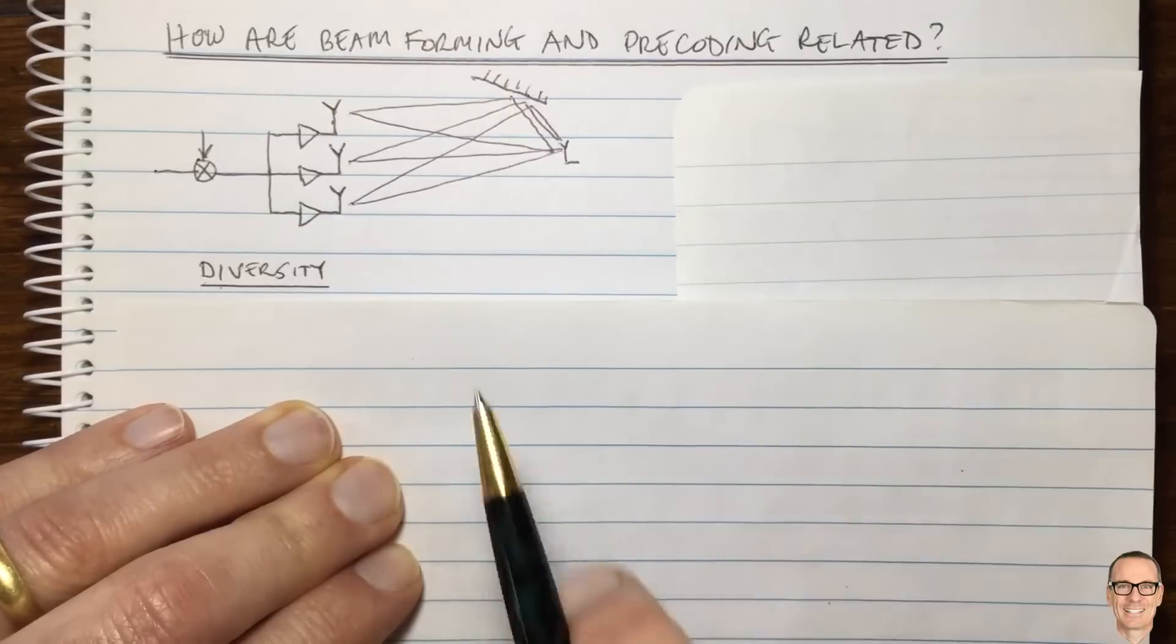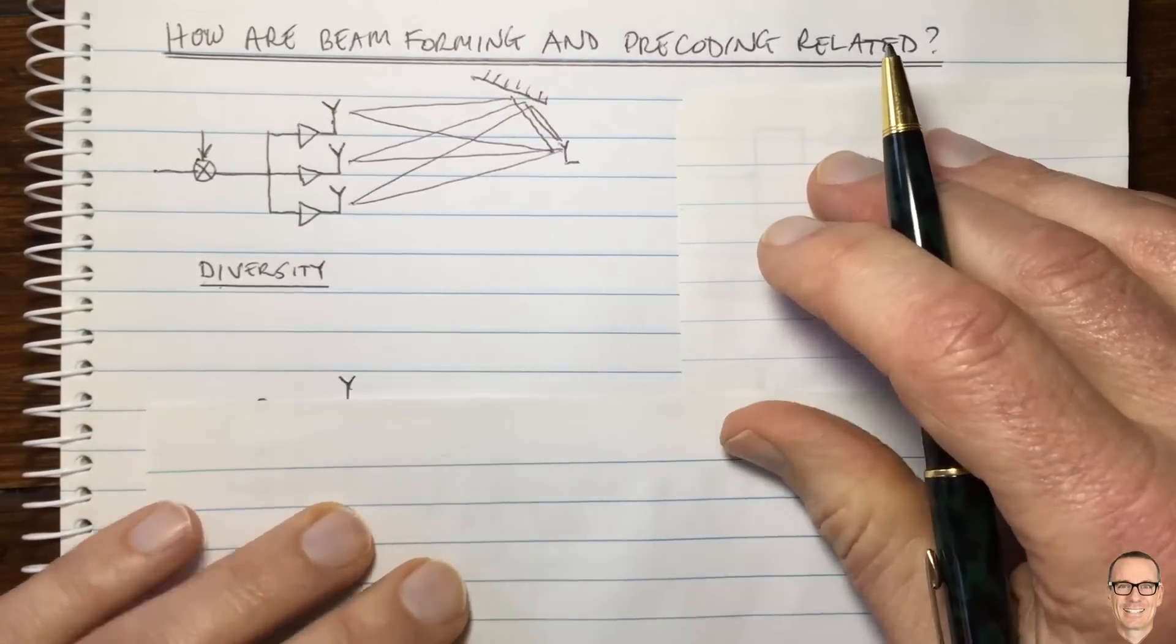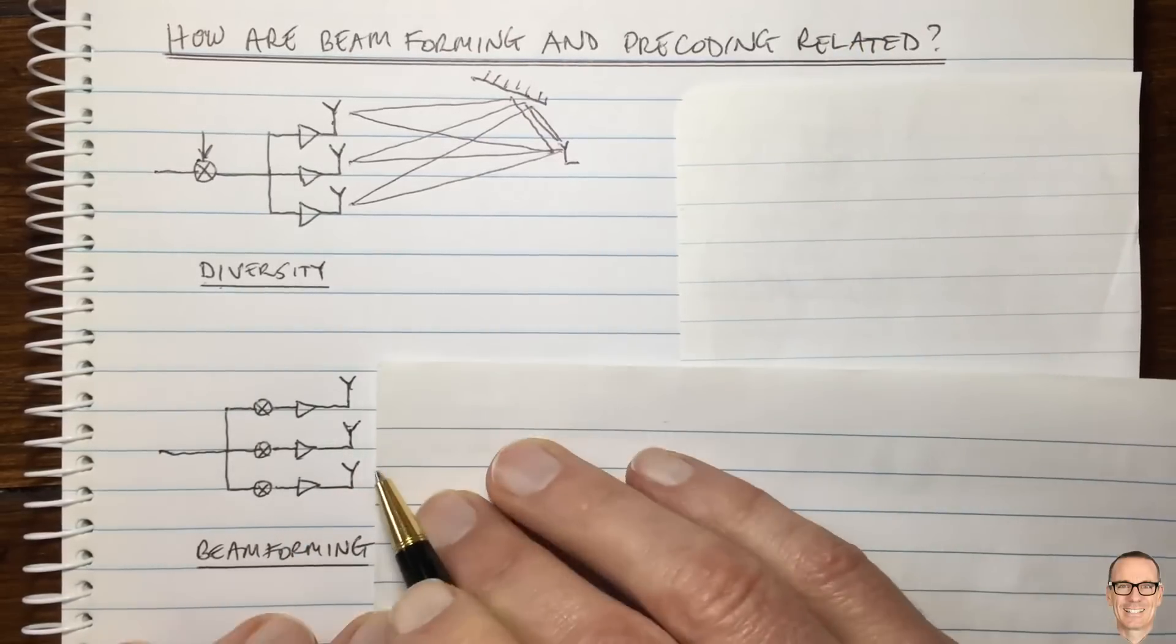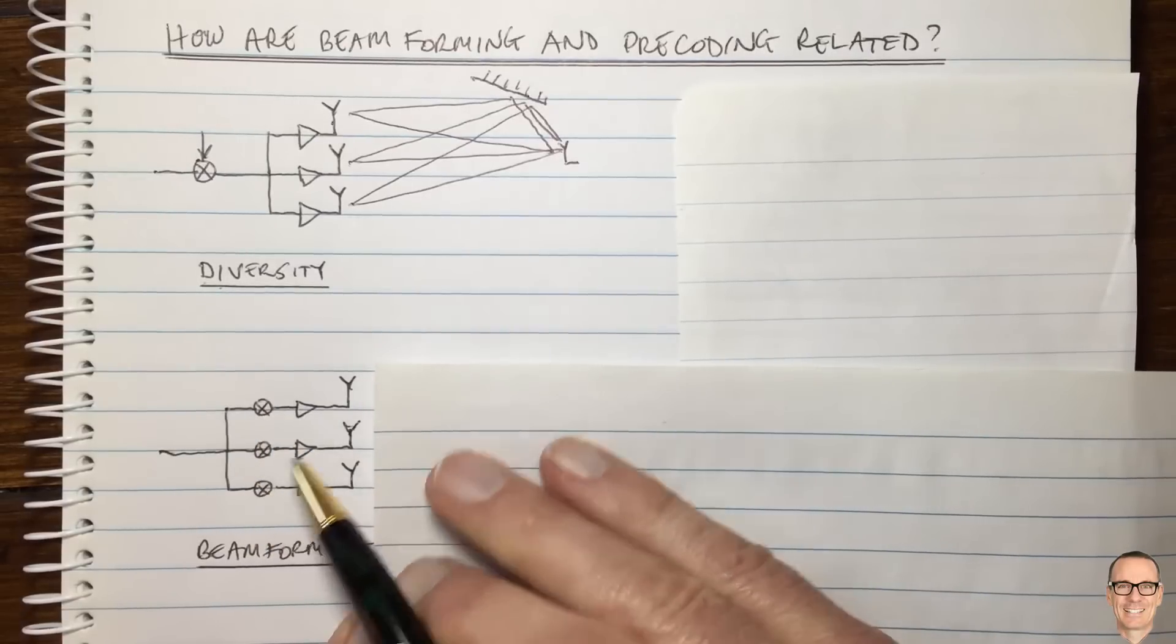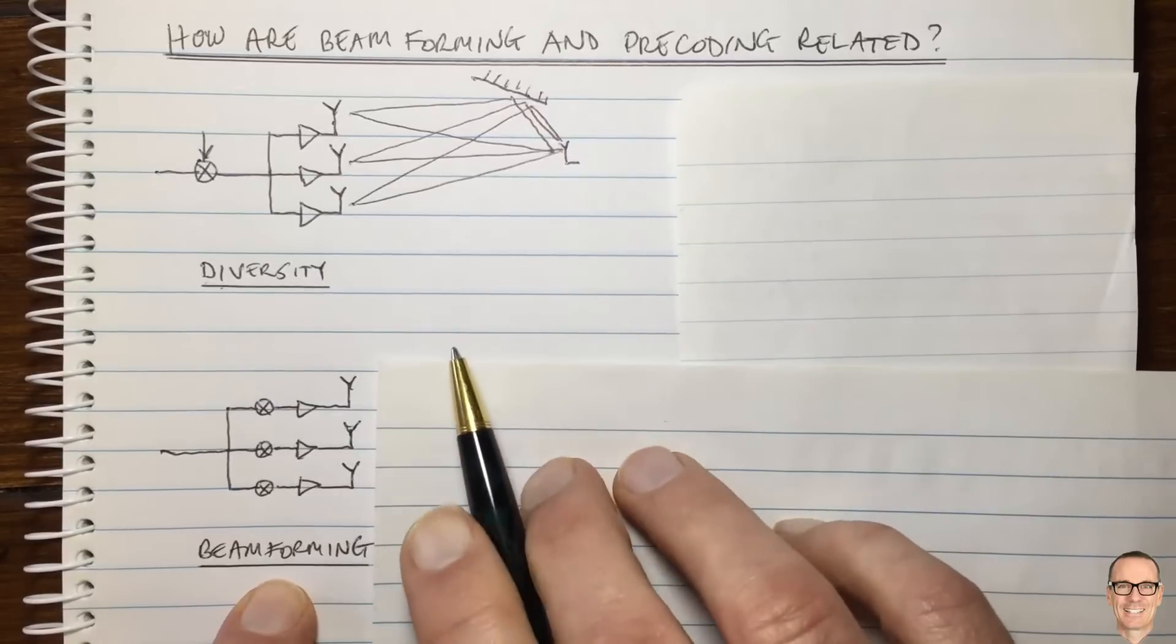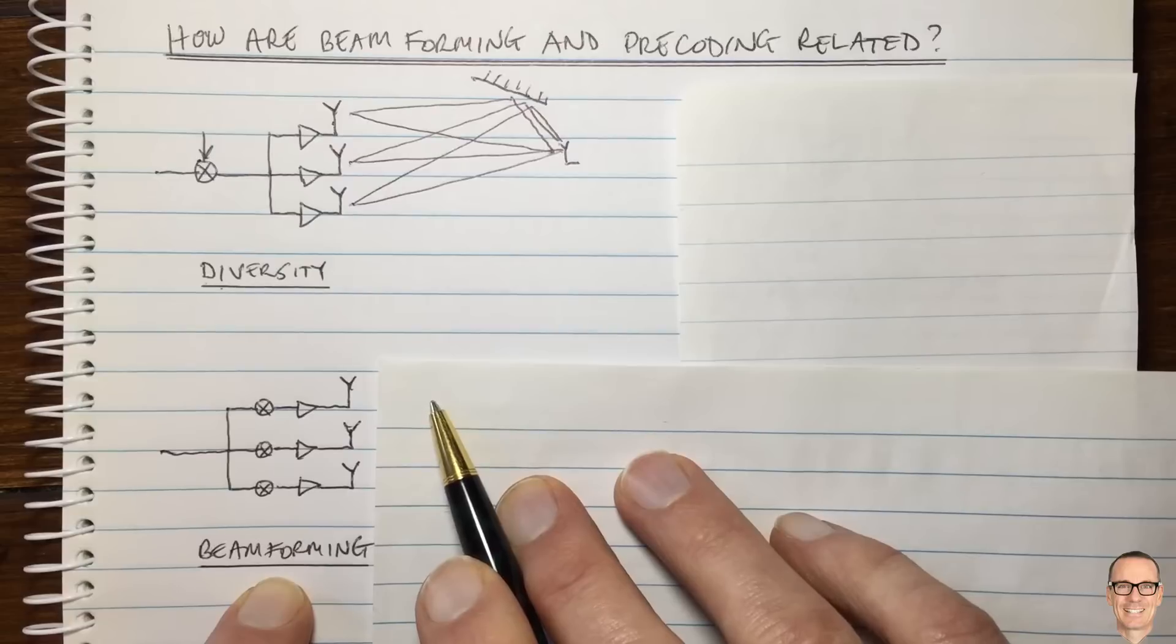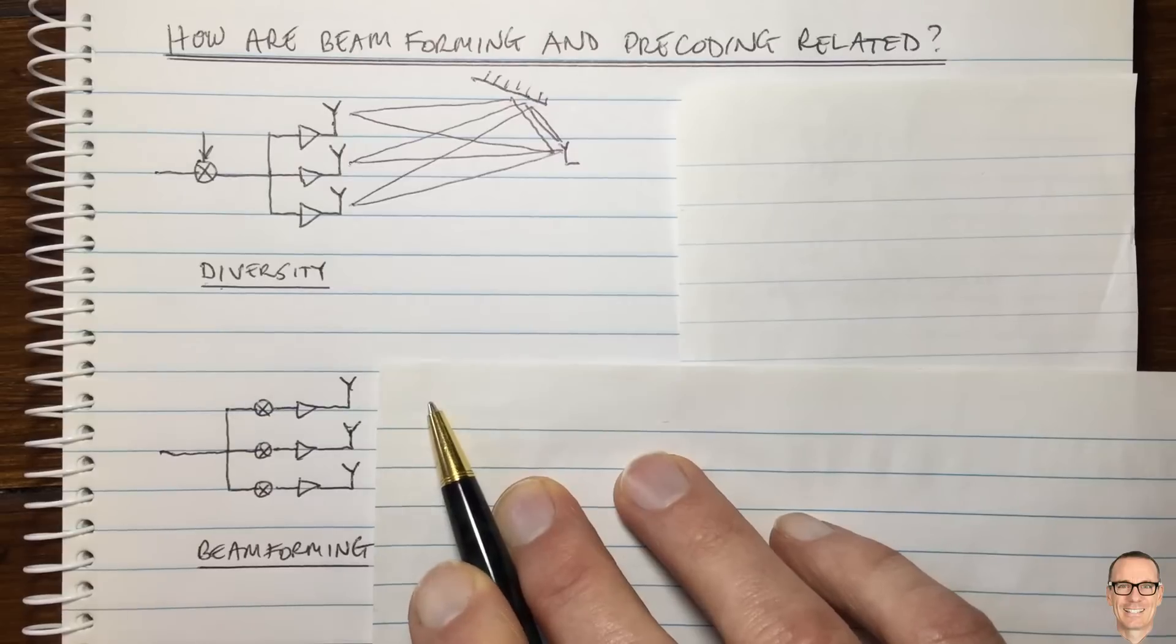Well, how does it relate to beamforming and precoding? If we add an element to our picture where now we are adding separate phases for the separate antennas, in this case we have what we call beamforming. There's a video on the channel explicitly on beamforming that explains this in detail. Check the description below the video.